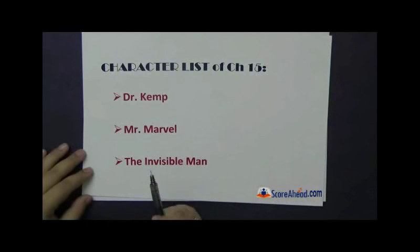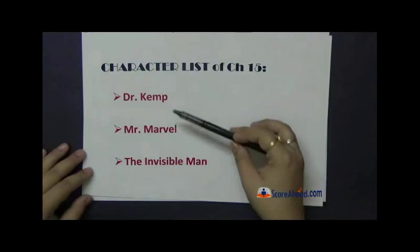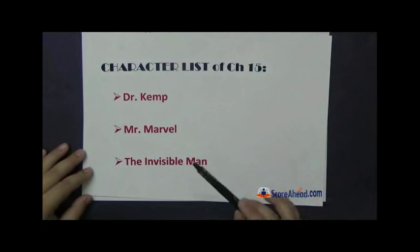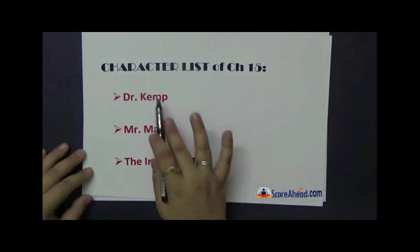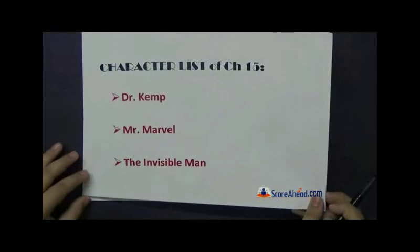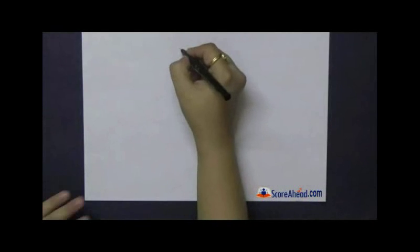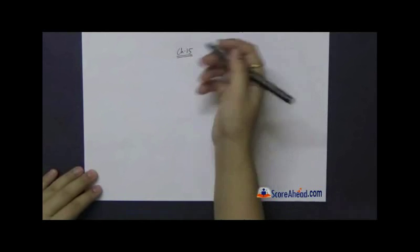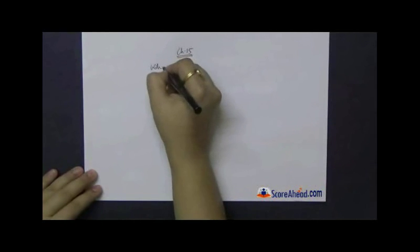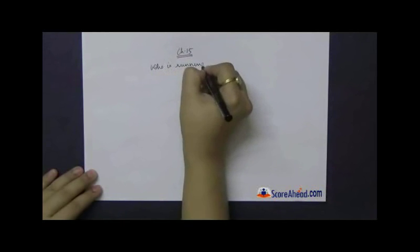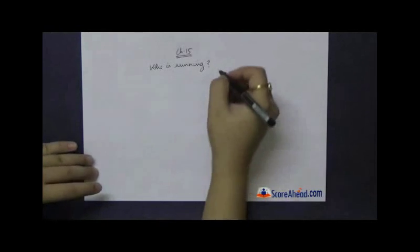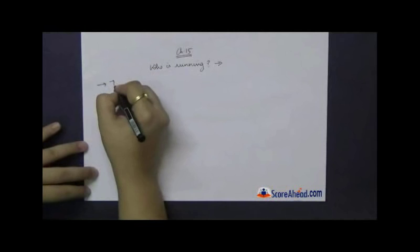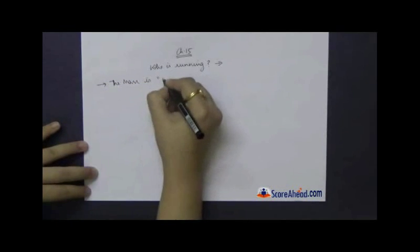In this chapter you can see the names of the most important characters of the novel listed right here: the invisible man, Mr. Marvel, and Dr. Kemp. So let us begin with what happens. As we see, the name of the chapter is The Man Who Was Running — so who is running? This is the first question we encounter in our mind when we read the title. The man who is running is Marvel.